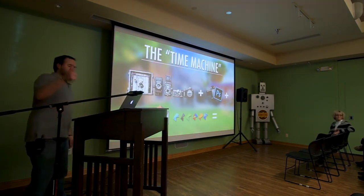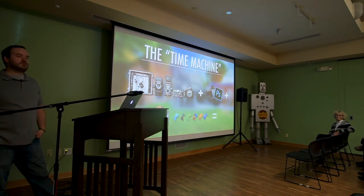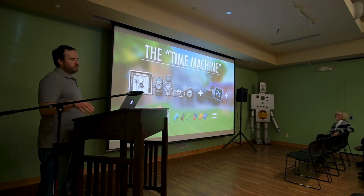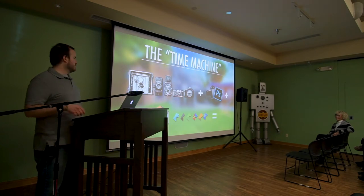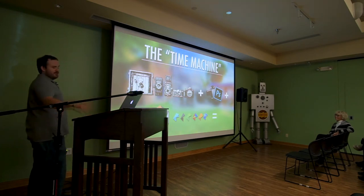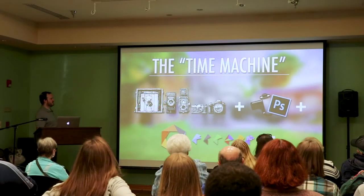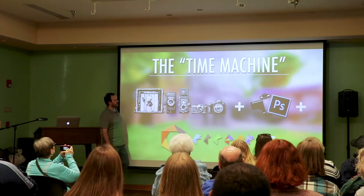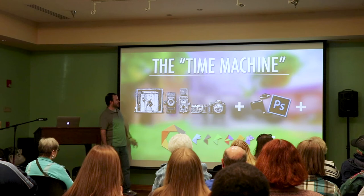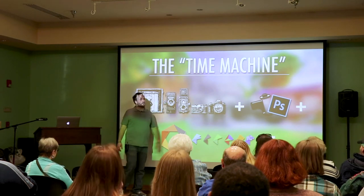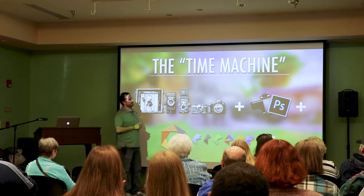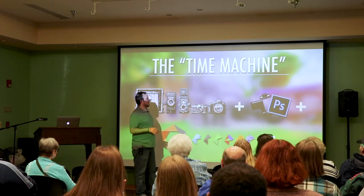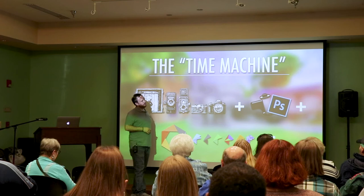That's the downtown central library — on the third floor they have what they call the Oklahoma Room, with numerous resources and plenty of people to help you there too. The time machine, I guess you could call it, is my process for how the images come to be. I've done a lot of research in photography — knowing how lenses have changed over the years versus the ones I use now. You can't just take an image from back then and expect it to fit the same type of lens.